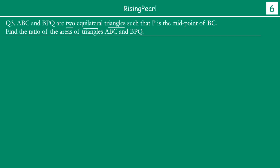We have two equilateral triangles ABC and BPQ such that P is the midpoint of BC. Let's draw the triangles. I have drawn equilateral triangle ABC and marked P as the midpoint of BC. These are not construction questions, so we draw the shapes roughly. At point P on BC, I have drawn a 60-degree angle, giving us point Q where this line intersects AB, forming equilateral triangle BPQ.